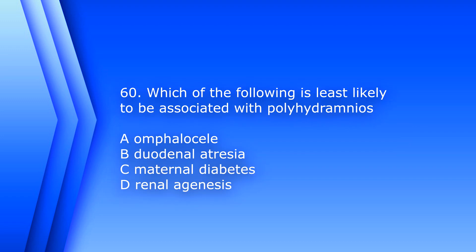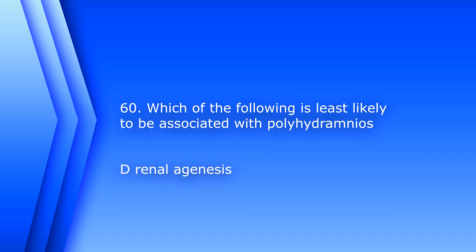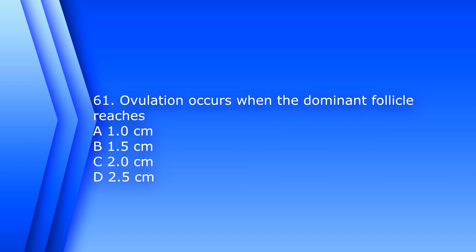Question 60. Which of the following is least likely to be associated with polyhydramnios? A. Omphalocele, B. Duodenal atresia, C. Maternal diabetes, D. Renal agenesis. The answer is D, Renal agenesis. If the fetus does not have kidneys, they will not be creating urine, which contributes to amniotic fluid, and they will have oligohydramnios or anhydramnios.